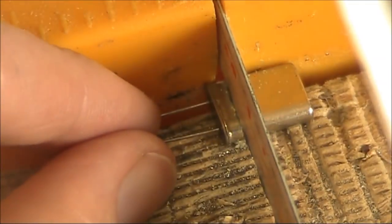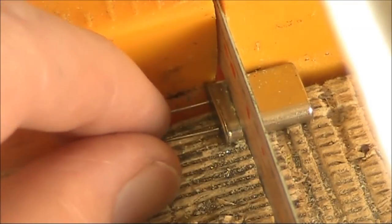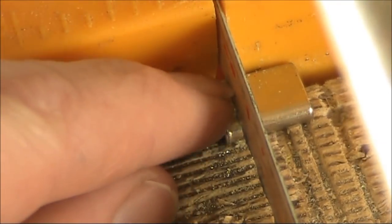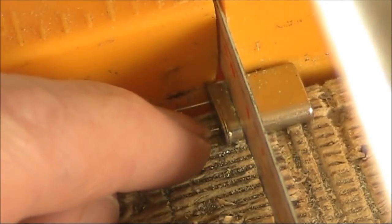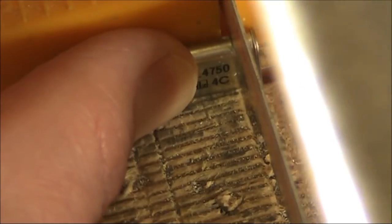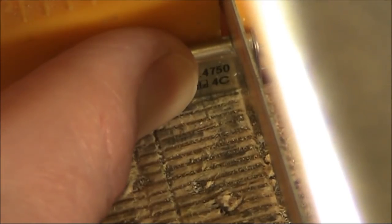You want access to almost all of the crystal element. So, you want to position your hacksaw blade about three or four millimeters above where the pins come out. You make a cut on one side, then on the other.